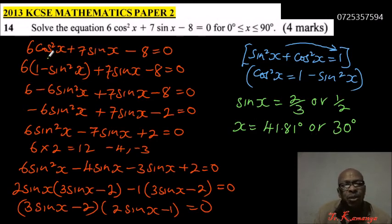If you come here and substitute for x, you put that here and 30, you will be able to get 0. If you put 41.18, you will still be able to get -8, you will be able to get equals 0.